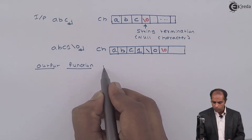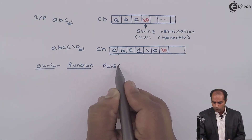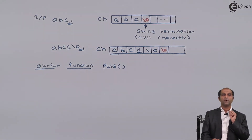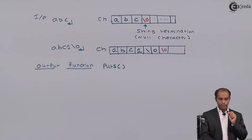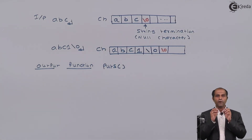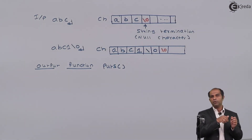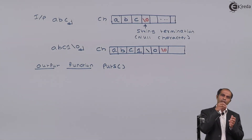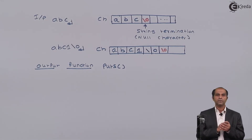Now let's look at the output function: `puts`. As the name suggests, it is an output function — the value is displayed from memory to the user. Whatever contents are stored in a character array are displayed as-is on the screen.